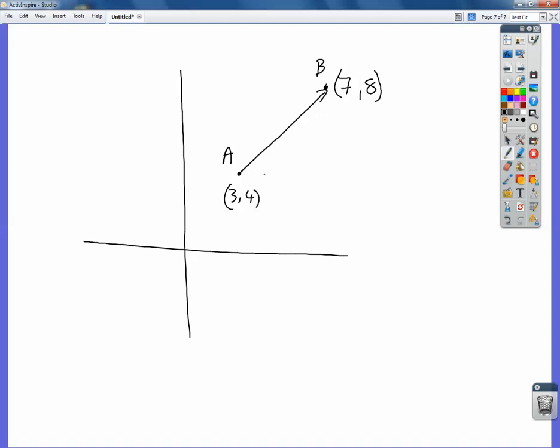It's gone from 3 to 7, so it's gone four lots of i, and it's gone from 4 to 8, so four lots of j. So the vector A to B equals 4i plus 4j.